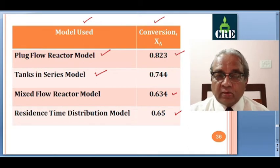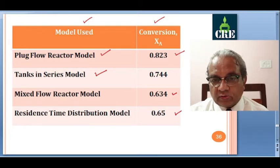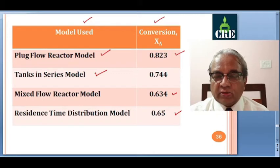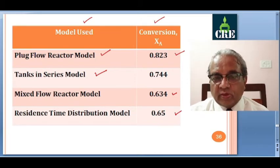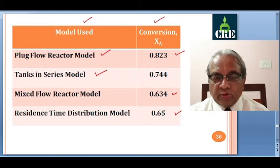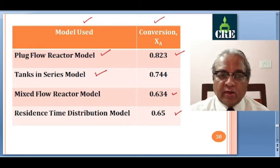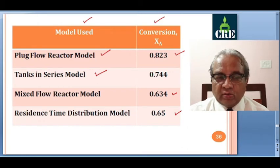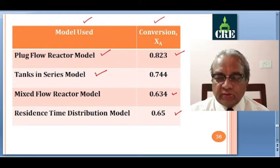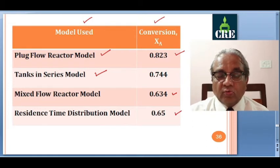Almost all problems from the exercises of all chapters covered have been solved, except tank-in-series and dispersion model where the curriculum restricts to introduction — though I have taken a little bit more. We have also studied qualitative and quantitative analysis for multiple reactions, the best setup to maximize desired product, temperature effects, and how conversion varies with temperature at different rate laws. Finally, introduction to non-ideal flow, the dispersion model, and tanks-in-series model have been covered.